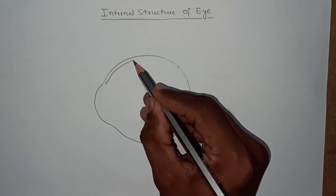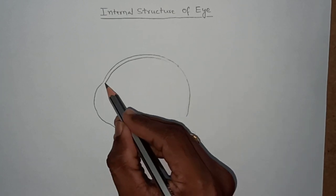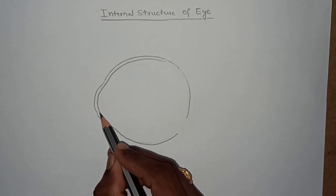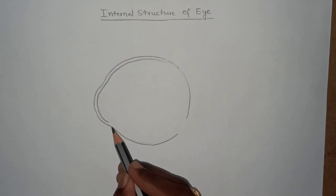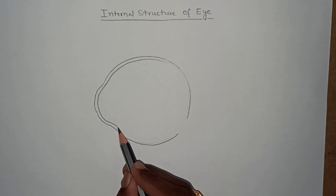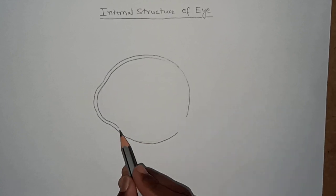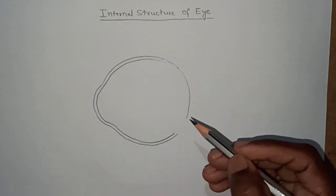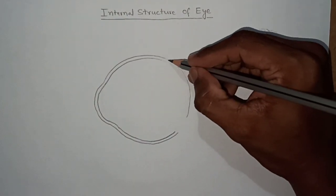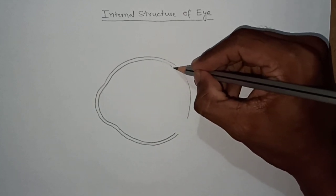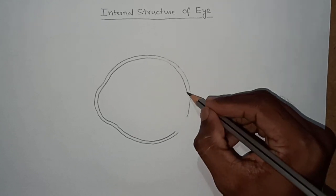And we have to give thickness for this sclerotic layer. This front part, this bulged part, is called cornea. Cornea is transparent, whereas the remaining part is tough and fibrous. The remaining part of the sclerotic layer is tough and fibrous.